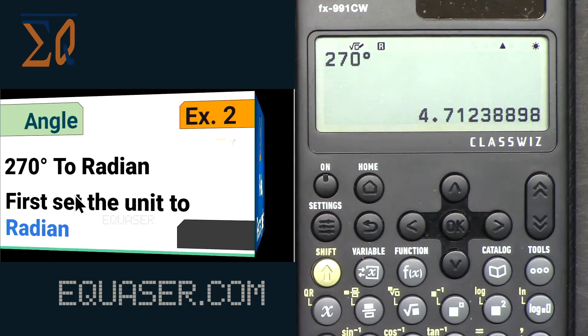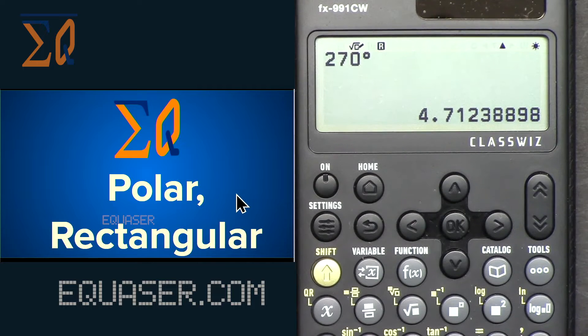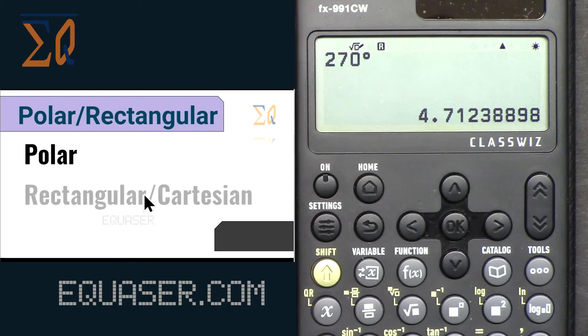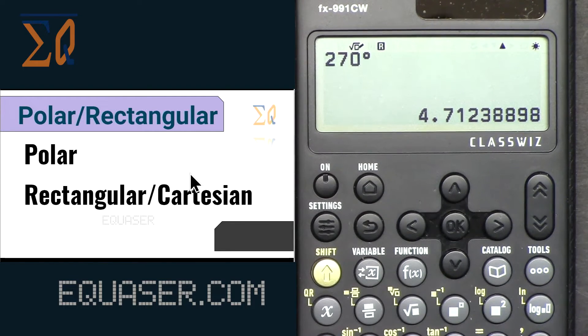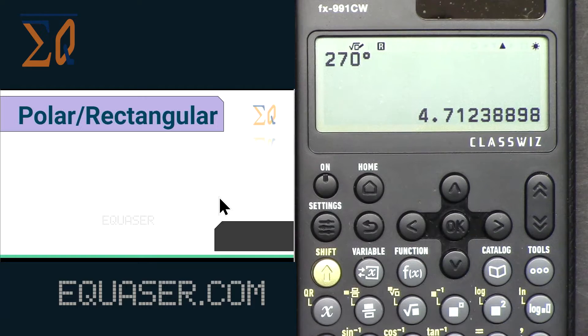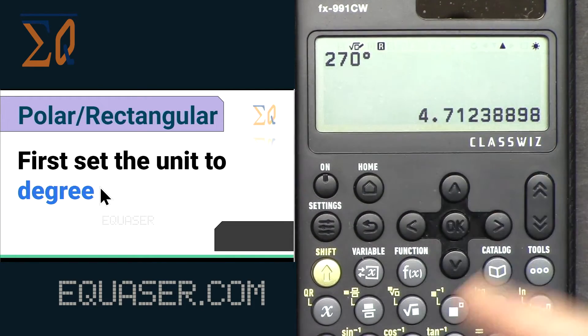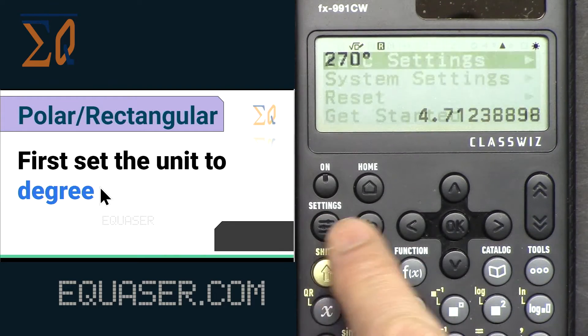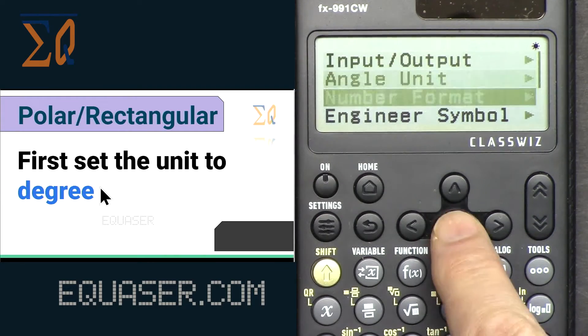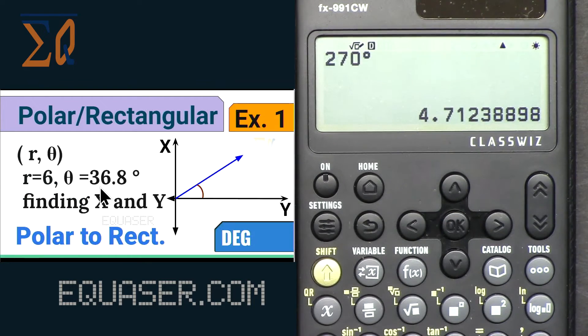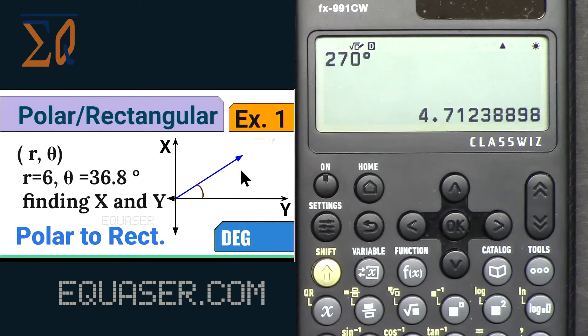Now let's see how we can convert polar and rectangular one to the other. Rectangular is also called Cartesian. First we have to be in degree if you need it, you can also do it in radian. I'm setting it in degree, All Clear.